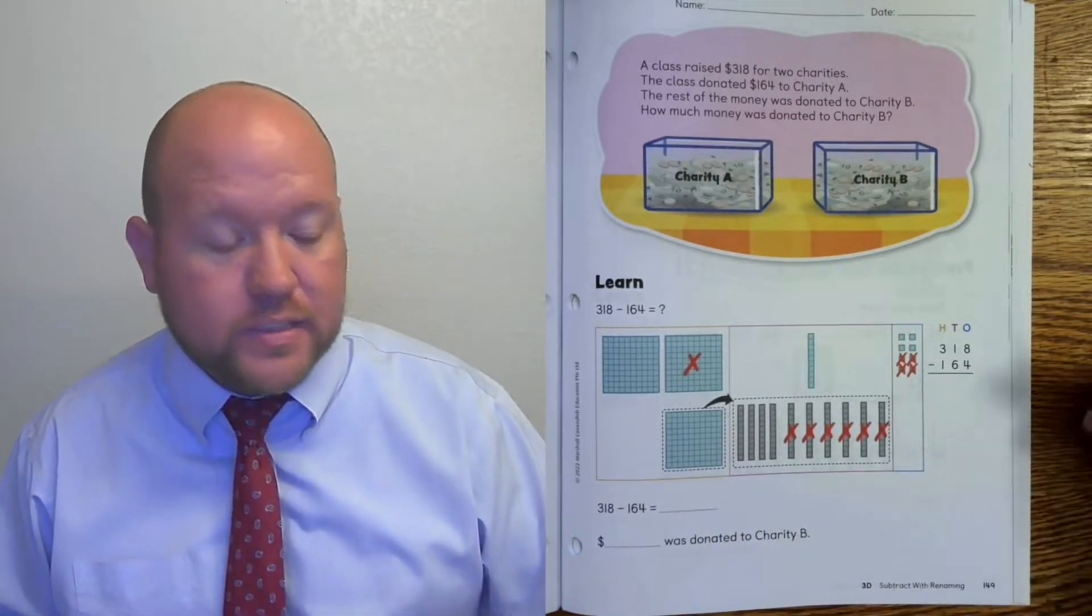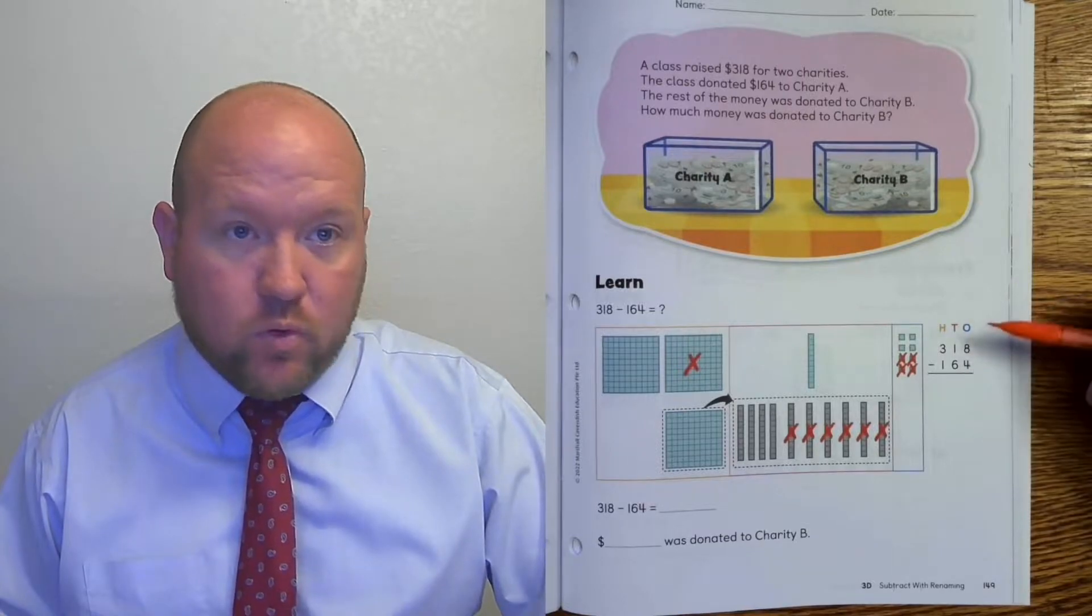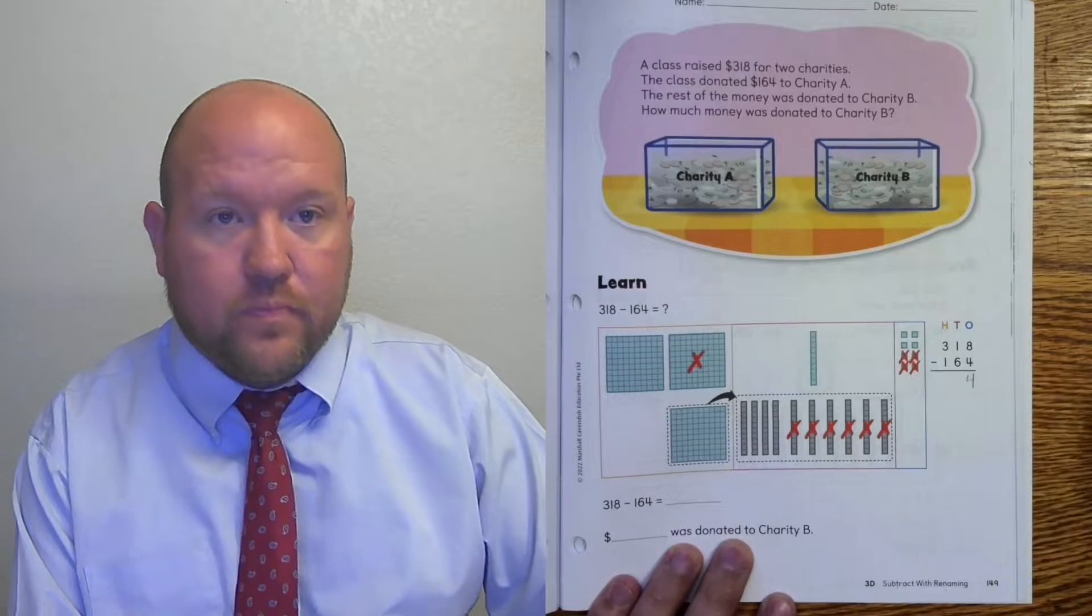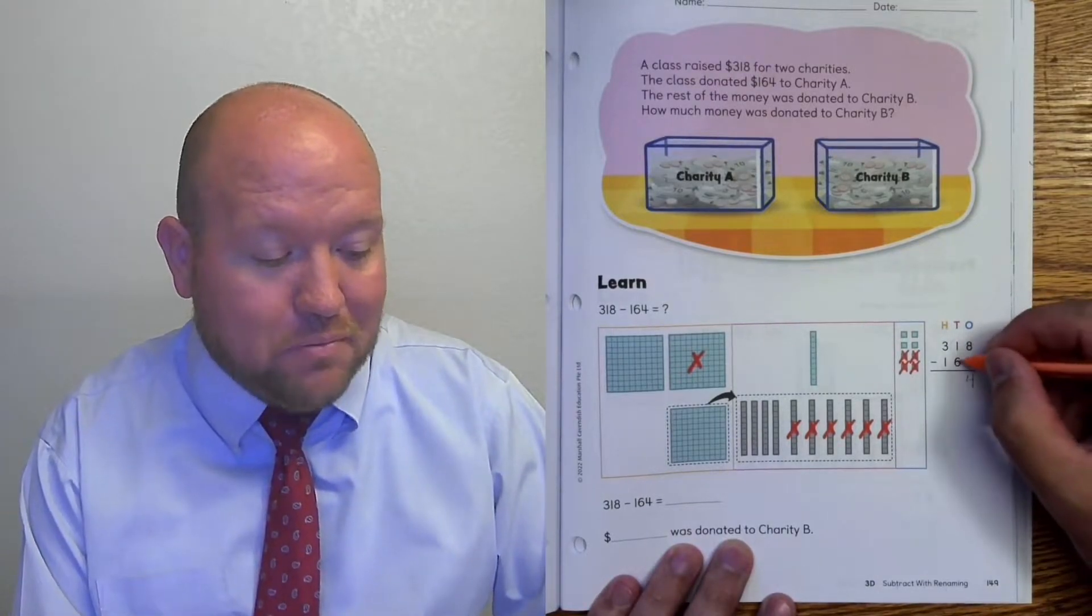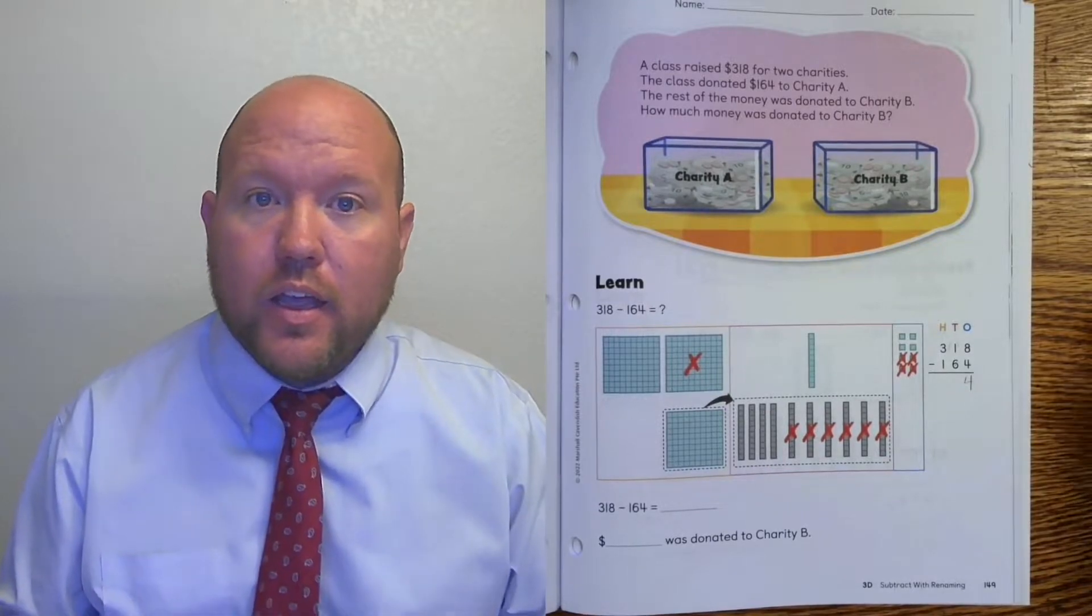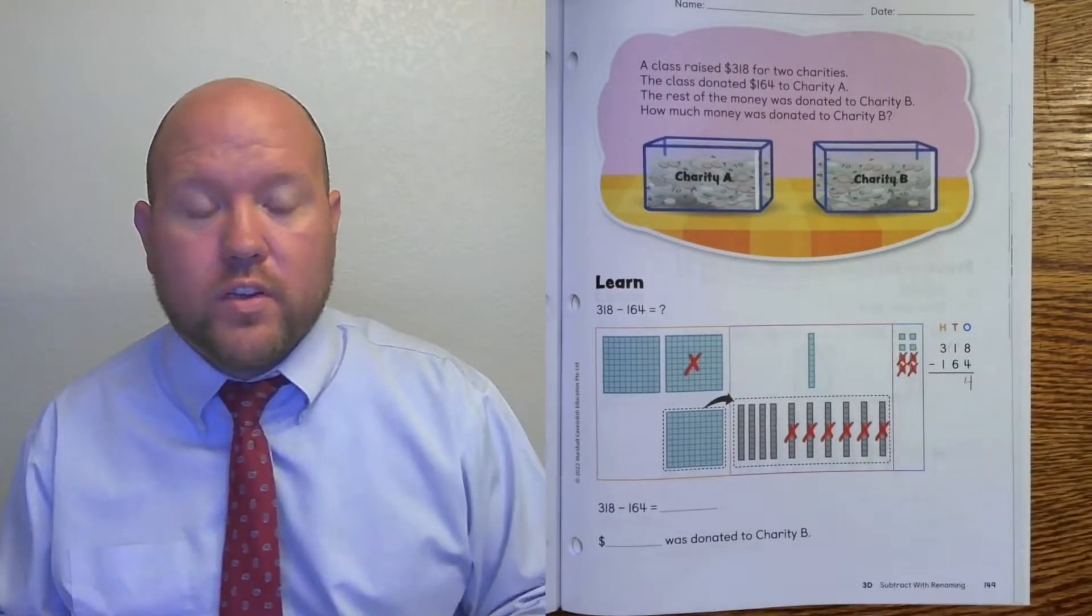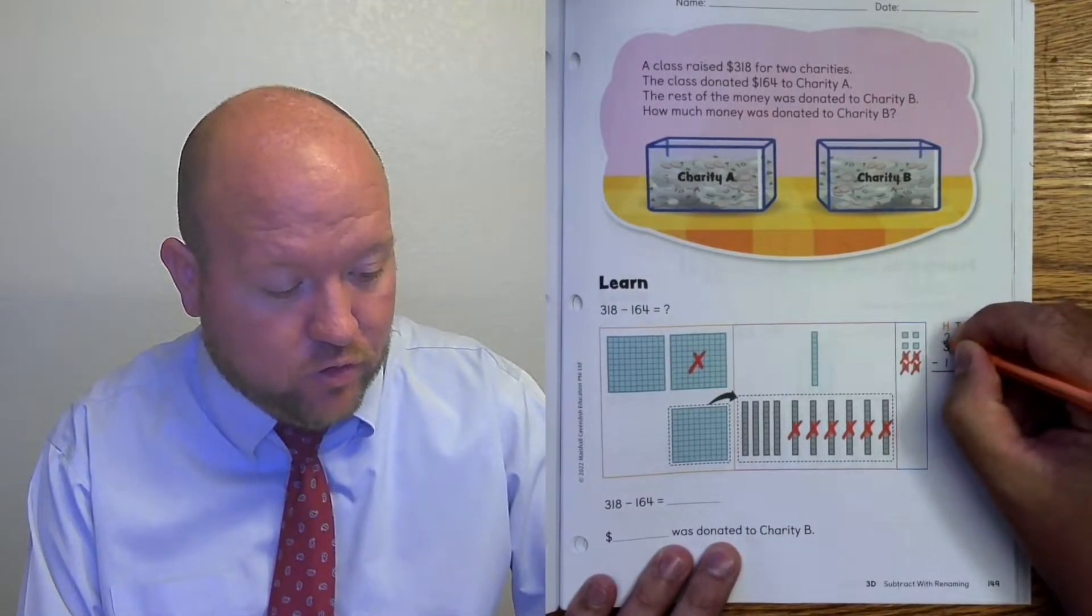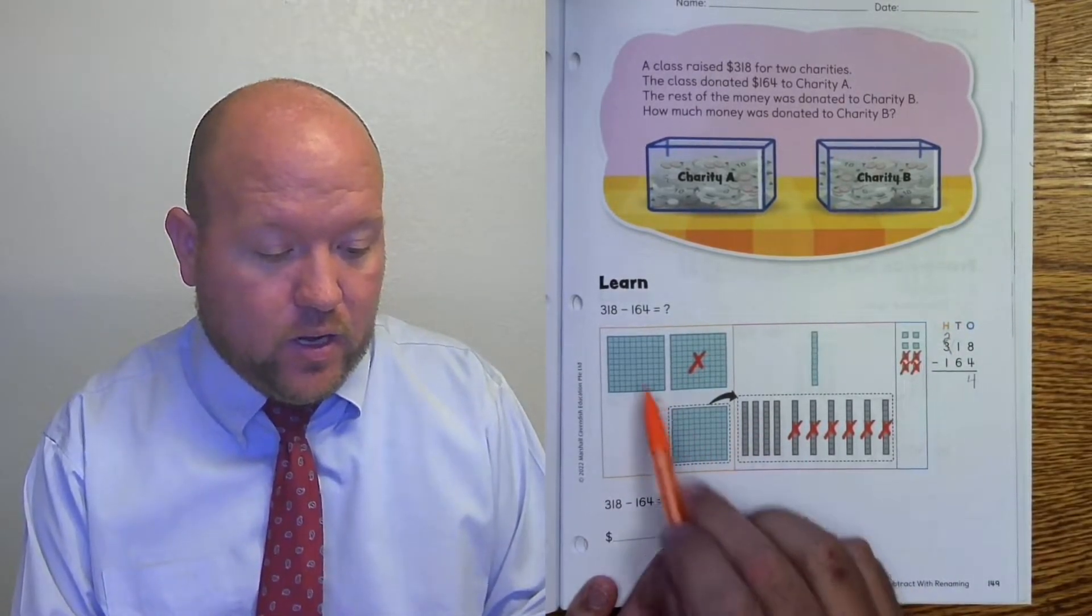Now we'll do this in our algorithm. So here 8 minus 4, that's easy. We can do 8 minus 4 and that is 4. But now we have 1 minus 6 and that's the problem. We can't do that. That would give us a negative number and we don't want that. So we're going to have to go over to the 3 and take away one of those hundreds. So we're going to have two hundreds which we see here.